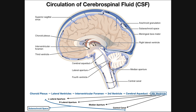CSF can also move from the fourth ventricle through the median aperture into the subarachnoid space — either into the subarachnoid space of the spinal cord or around the cerebellum. Additionally, CSF can travel down the central canal of the spinal cord and eventually into the subarachnoid space. All four pathways ultimately deliver CSF to the subarachnoid space.